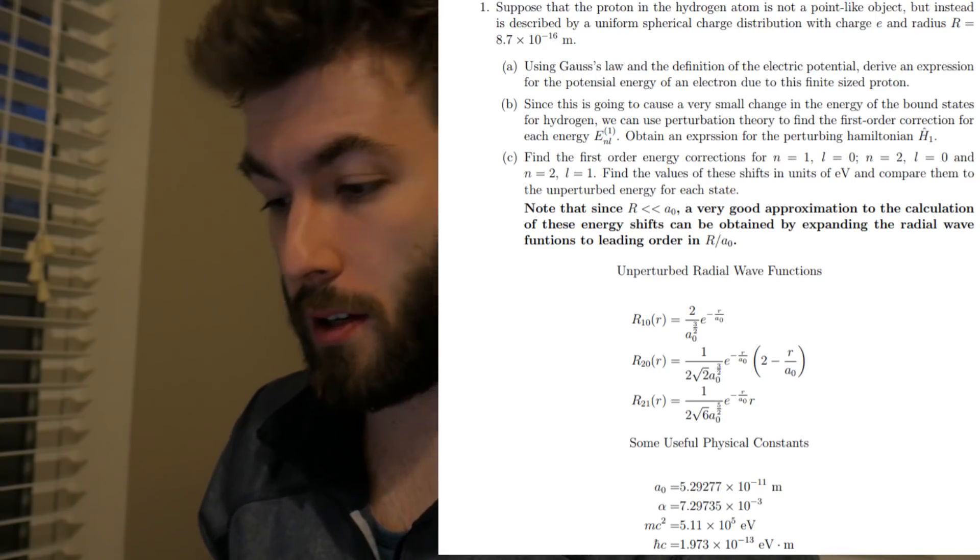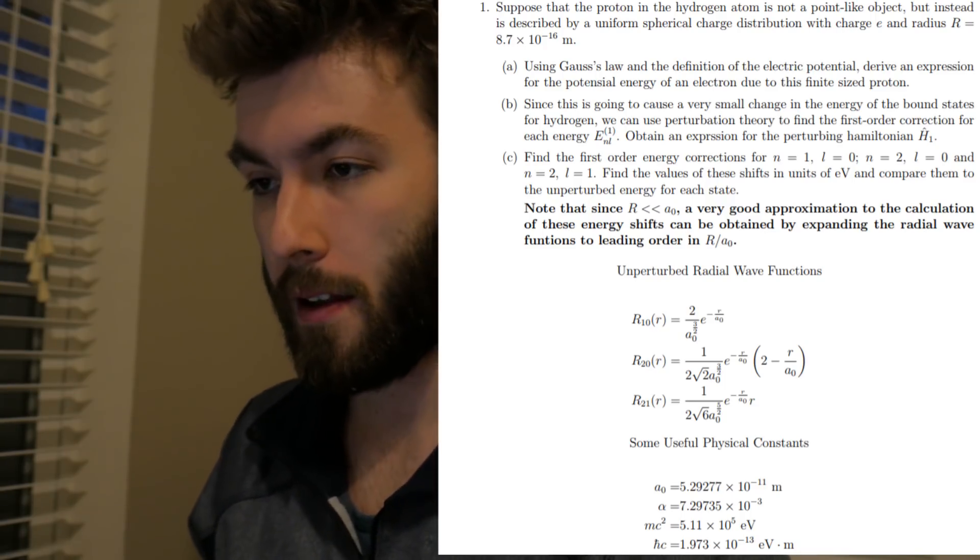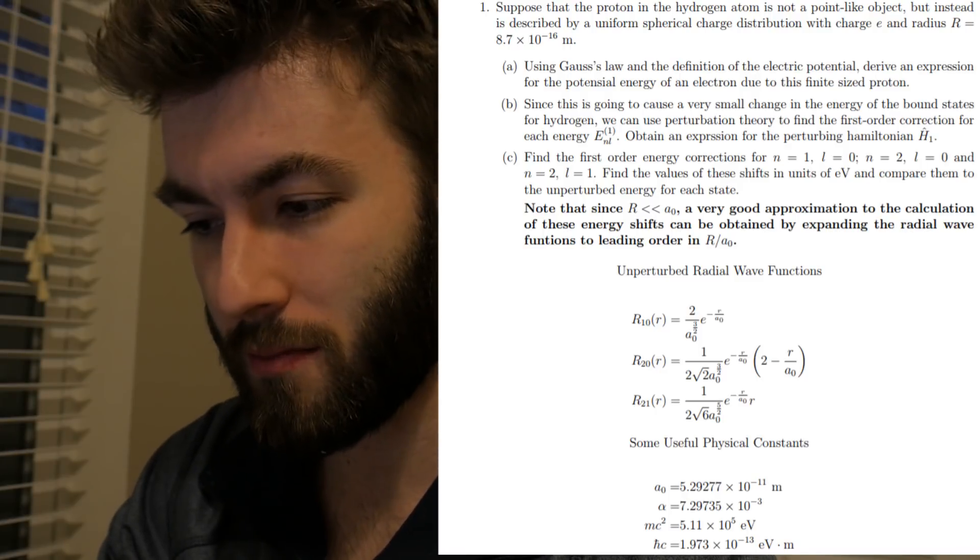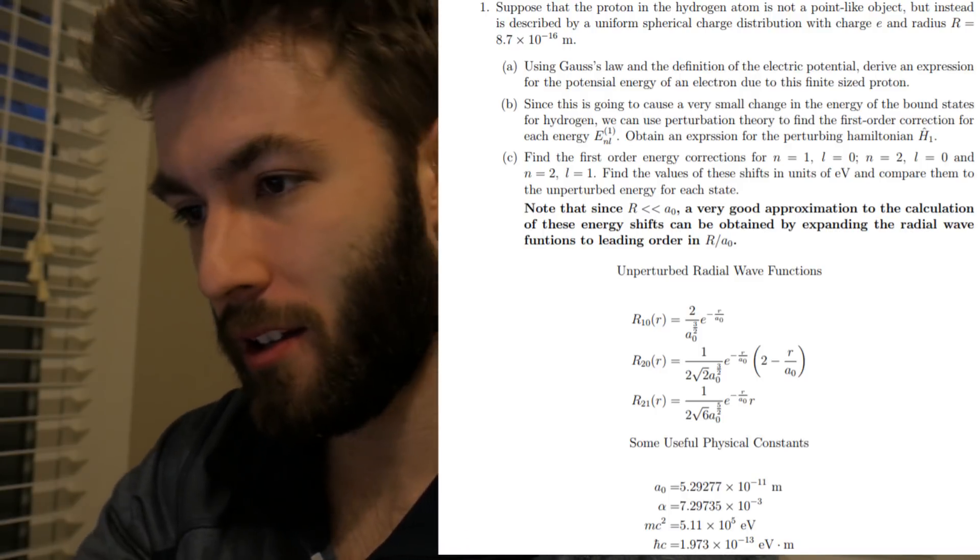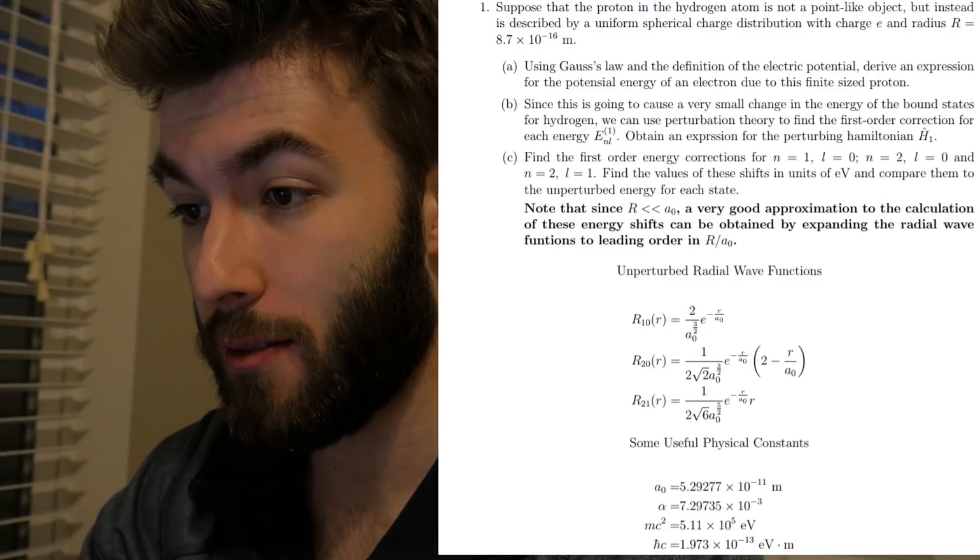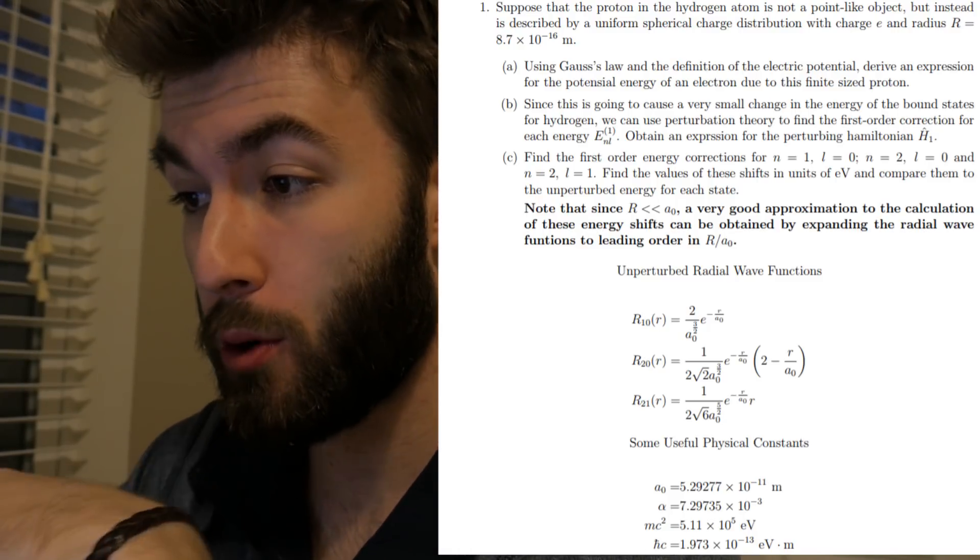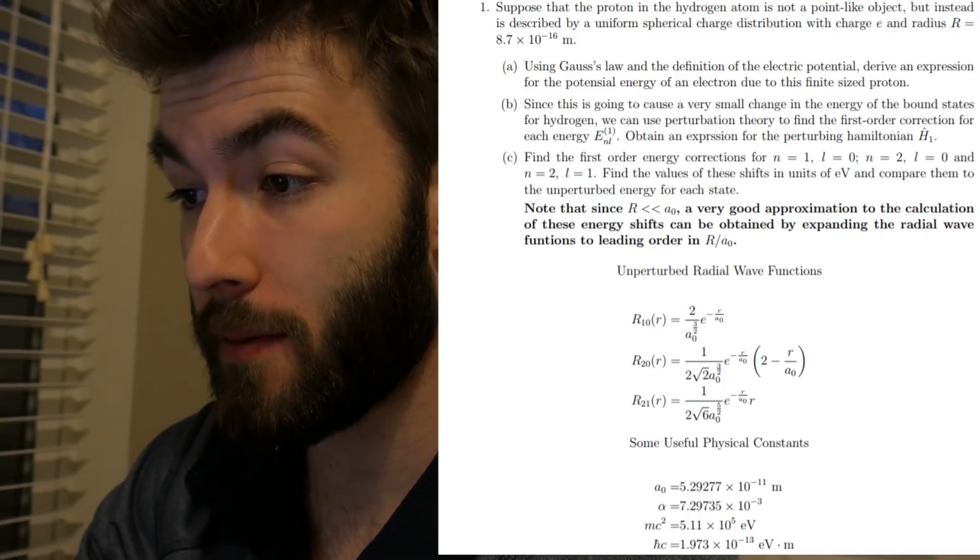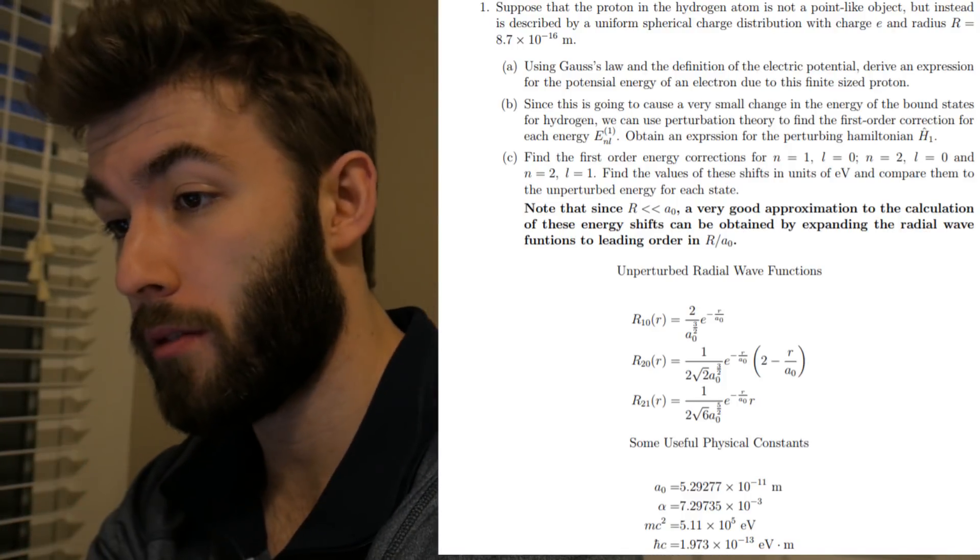Okay, so far so good. So far this has been pretty easy. The next step gets the next problem a little bit more algebra, a little bit more calculus. The next one says to find the first order corrections for different quantum numbers and find the shifts, find the values of these shifts in units of electron volts.